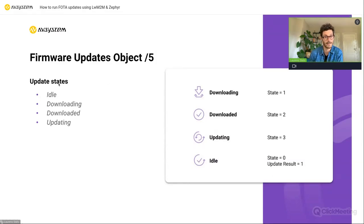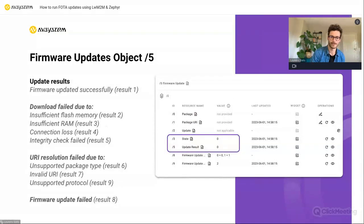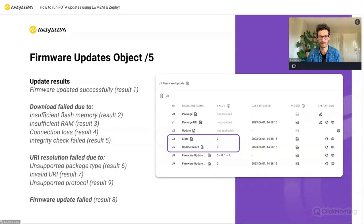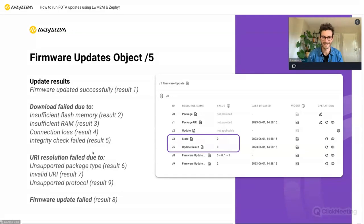Idle is before and after the update. Downloading is quite clear. Downloaded means the download has finished and authenticity and integrity have been validated. Updating is once the two images are being swapped. Next to these update states there are also update results — the Lightweight M2M standard defines the most common update results. Ideally you want to see result 1, meaning the update was successfully completed. But there are also numerous reasons why it could fail — insufficient flash memory, connection loss, invalid URI, or unsupported protocol. Throughout the update process you can keep track of the state and the update results to stay informed.